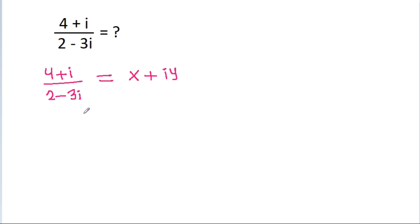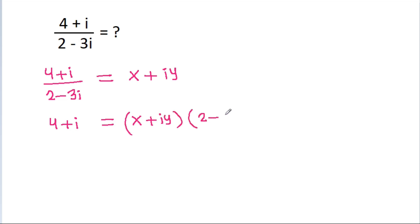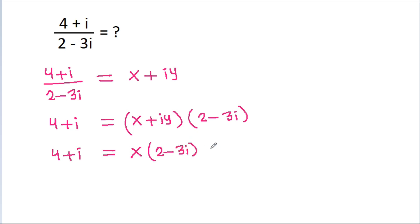And if we cross multiply, then 4 + iota will be equal to (x + iota y) times (2 - 3 iota). And 4 + iota is equal to x times (2 - 3 iota) plus iota y times (2 - 3 iota).